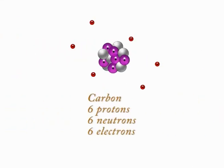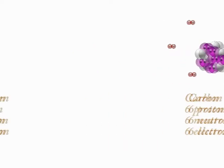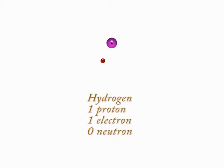Carbon has six protons, six neutrons and six electrons. Hydrogen only has one proton and one electron and no neutron.